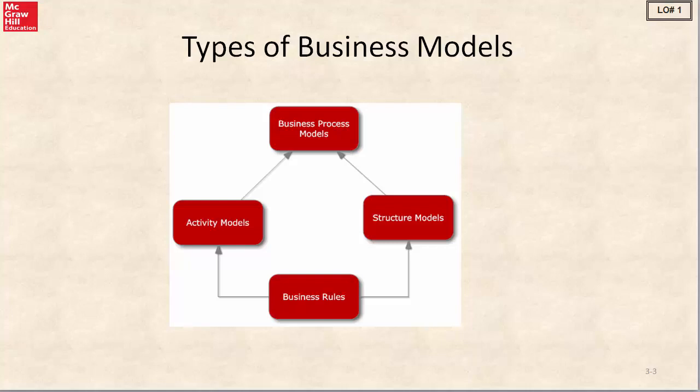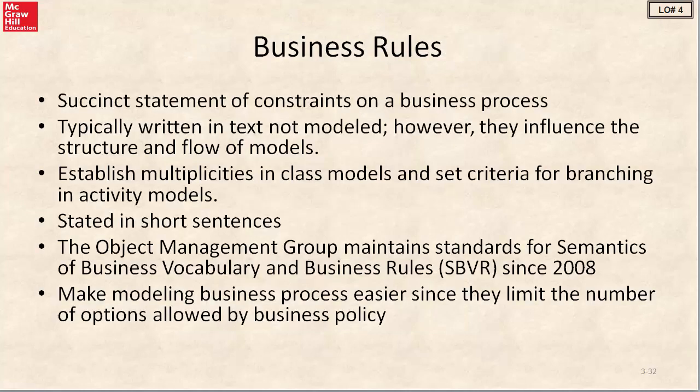In Chapter 2, when we talked about activity models and structure models, we said that business rules inform both models. A business rule is usually a succinct statement of constraints on a business process, typically written in text, stated in short sentences. Business rules help us establish multiplicities in class models, and they set criteria for branching in activity models.